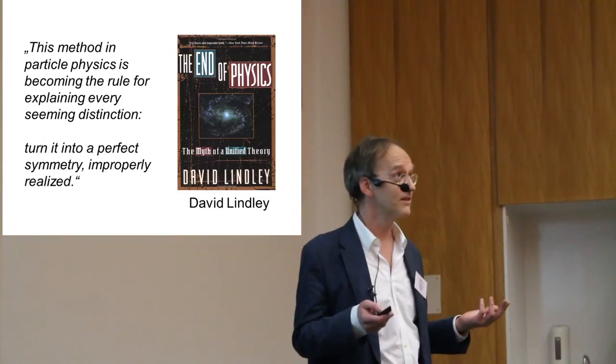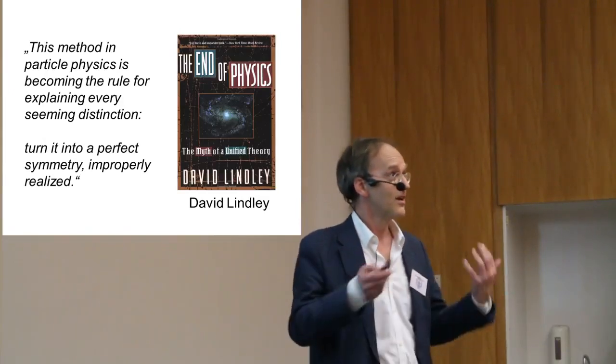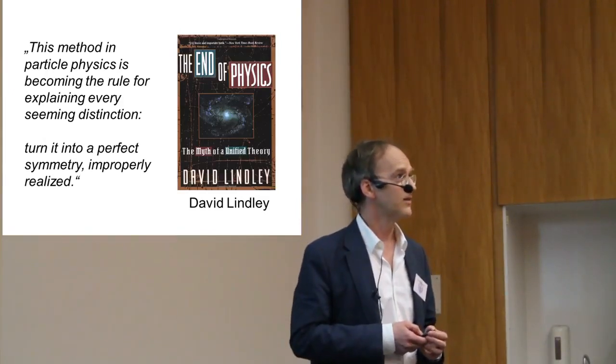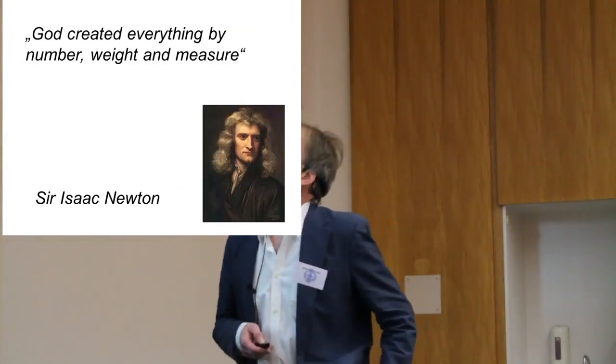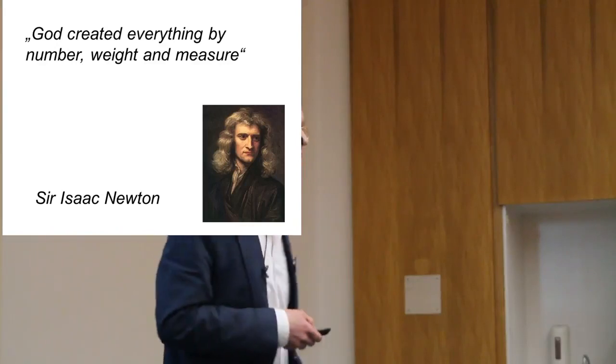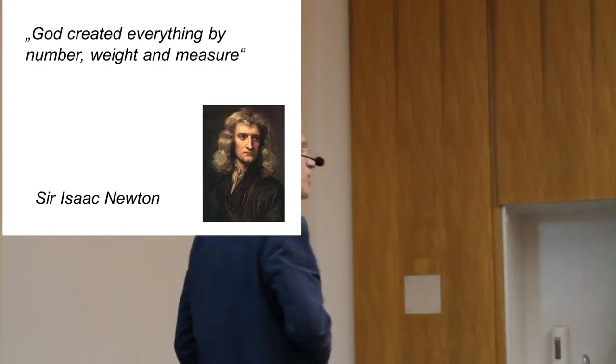God created everything by number, overweight, and measure. And these are the things physicists ought to predict. We don't have to worry about fancy stuff like strangeness. Just predict a couple of numbers. That's what you're supposed to do as a physicist.